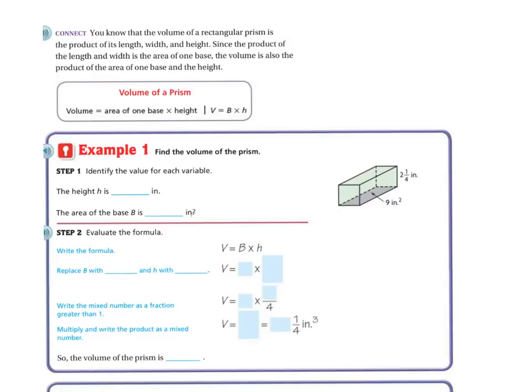So volume equals the base times the height of the base. So let's identify for each variable. So height is, in this case it's 2 1/4 inches. And the area of the base, in inches, because if the base is 9 inches. There's the base.